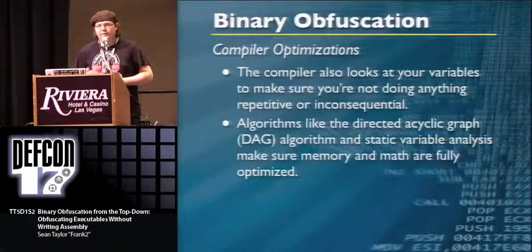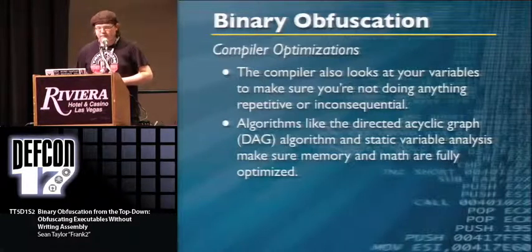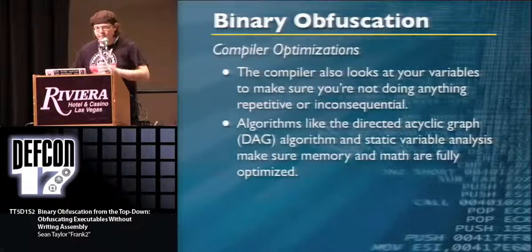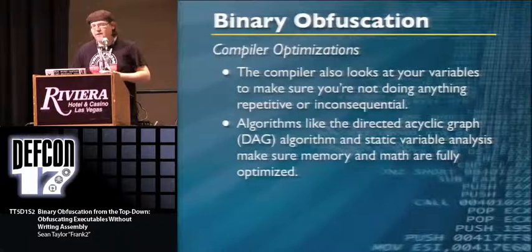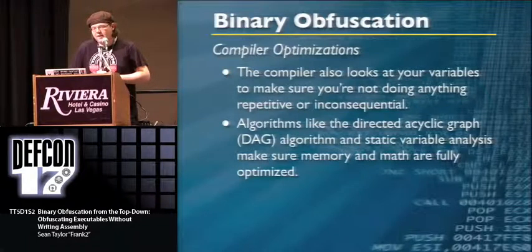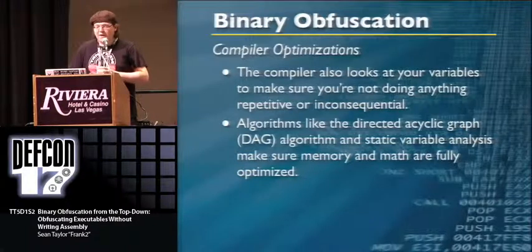The compiler also looks at your variables to make sure you're not doing anything redundant — making sure code isn't repetitive or that things don't cancel each other out. Various algorithms can point this out, like the DAG algorithm and static variable analysis.